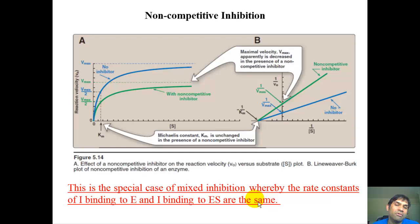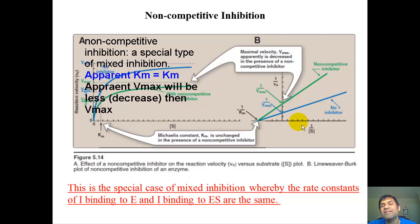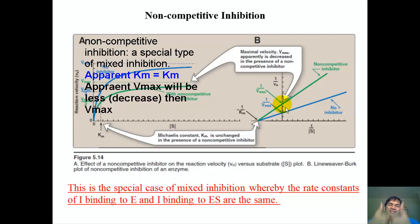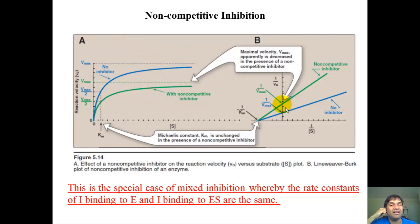With pure non-competitive inhibition, there is a common x-intercept on the Lineweaver-Burk plot, so apparent Km equals Km. The apparent Vmax decreases while apparent Km stays the same. This only occurs when the dissociation constants for the inhibitor binding to the free enzyme and to the enzyme-substrate complex are exactly equal.